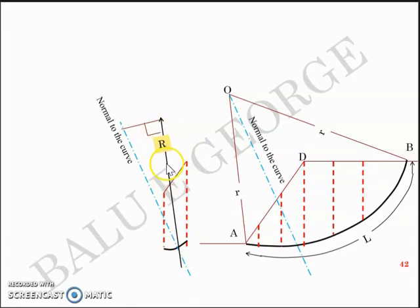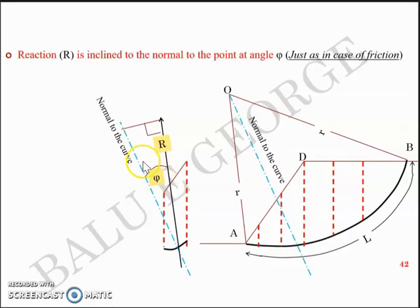Let's mark it as R and it'll be at an angle phi with respect to the normal. So reaction R is inclined to the normal to the point at angle phi, phi being the angle of internal friction. It's quite similar to the case of a friction mu W and R. The same principle gets applied here. You have the normal here, you have the reaction R here and it's inclined to the normal at the angle of internal friction phi.